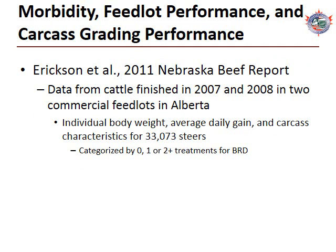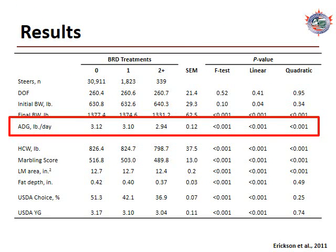In 2011, Galen Erickson and others published an article titled Morbidity, Feedlot Performance, and Carcass Grading Performance in the Nebraska Beef Report. Although published in Nebraska, the data were from two commercial feedlots in Alberta from cattle finished in 2007 and 2008. From that population, there were 33,073 individual carcass records linked to individual animal treatment histories. Each animal was categorized as receiving zero, one, or two or more treatments for BRD.